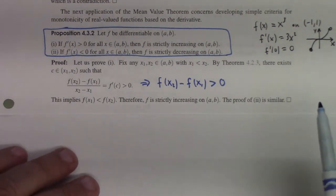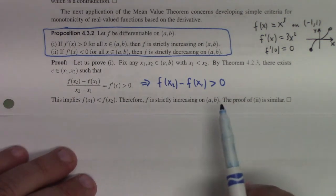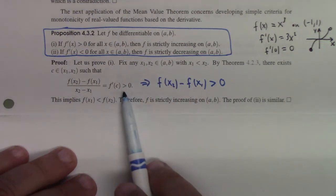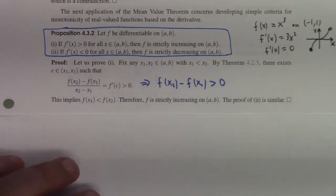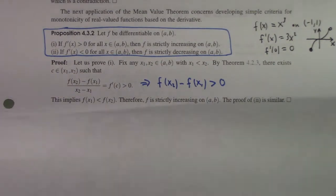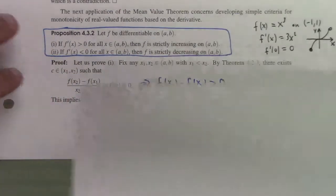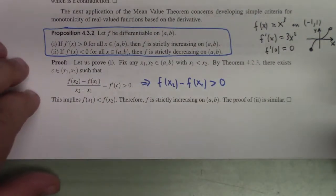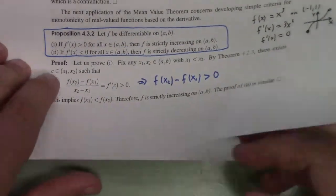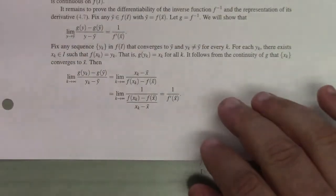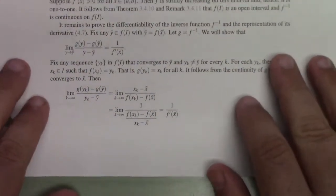The proof for the decreasing case is exactly the same, except instead of greater than you have less than, which flips things around and gives strictly decreasing instead. We've been aware of this connection between the sign of the derivative and increase/decrease since Calculus 1, but it's nice to see the proof.